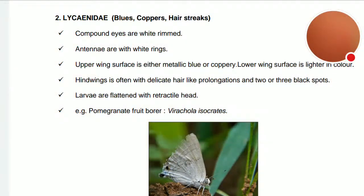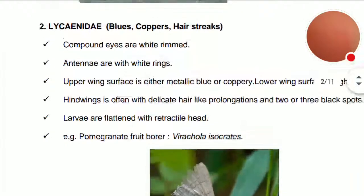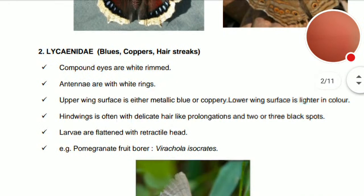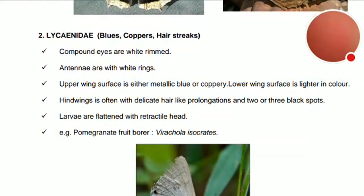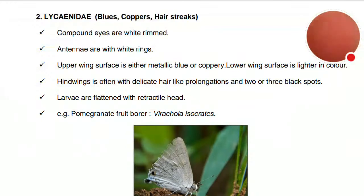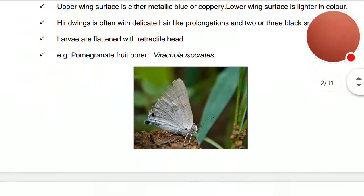Lycaenidae members are called blues, coppers, or hairstreaks. The compound eyes are white-rimmed with a white ring around them. The antennae have white rings. The upper wing surface is either metallic blue or coppery, while the lower wing surface is lighter in color. The hind wing often has delicate hair-like prolongations and two or three black spots. Larvae are flattened with a retractile head. Example: pomegranate fruit borer, Virachola isocrates.